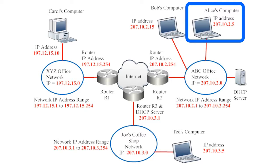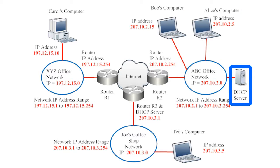Unlike the XYZ network, the ABC office network uses dynamic IP addresses instead of static IP addresses — some of these IP addresses are subject to change. The ABC office network has a special piece of hardware called a dynamic host configuration protocol server, or DHCP server. The DHCP server assigns a device one of the 254 possible network IP addresses each time a device begins a new internet session, and leases each IP address for a set period of time.